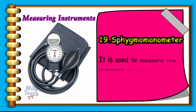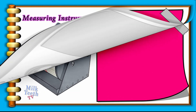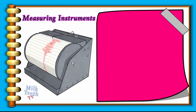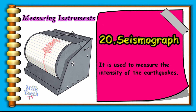Sphygmomanometer. It is used to measure the blood pressure of living beings. Seismograph. It is used to measure the intensity of earthquakes.